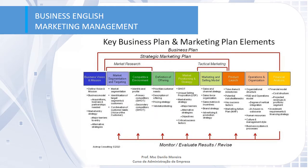Here we have the key business plan and marketing plan elements. This plan is divided into a business plan and a strategic marketing plan. Inside the strategic marketing plan we have market research and tactical remarketing. The important topics are business vision and mission, marketing segmentation and targeting, competitive environment, definition of offering, market positioning and strategy, marketing and selling model, product launch, operations and organization, and financial analysis. All these topics need to be monitored, evaluated, and revised each period.